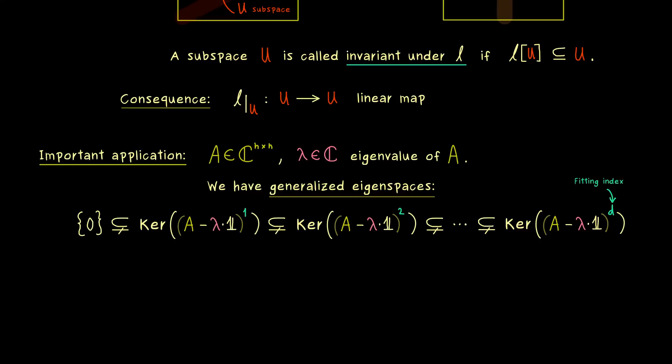And the first one in the chain is just the ordinary eigenspace, where we already know it's non-trivial. And then we know we can increase the power until we reach the so-called fitting index. And the name I choose for this index is a lowercase d. This means if we now consider a kernel with an even higher power, we will not change this one at all. Hence, the minimal possibility for the fitting index is 1, and the maximal possibility would be the dimension n.